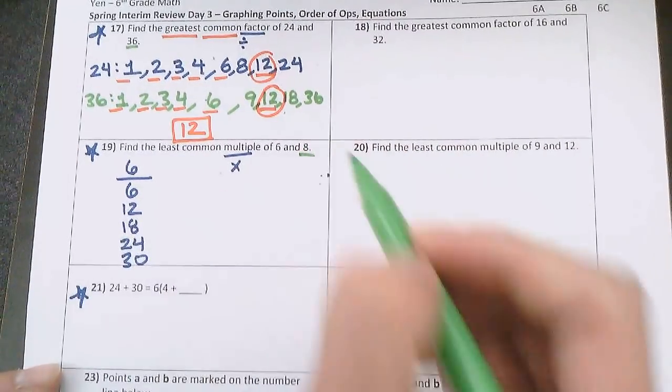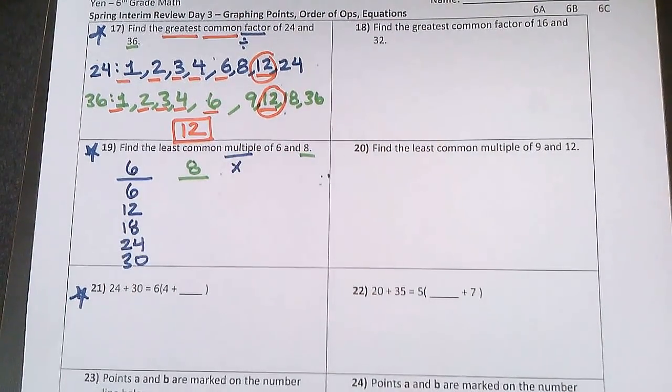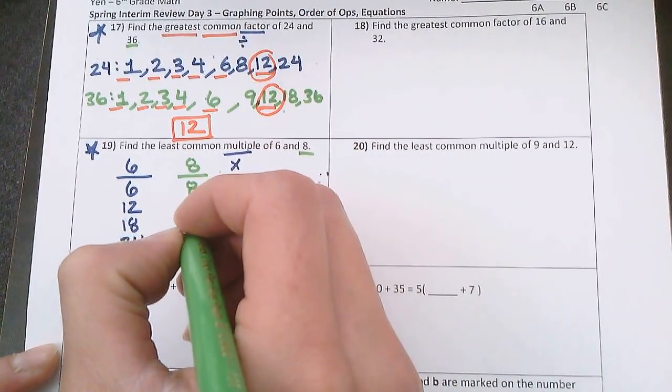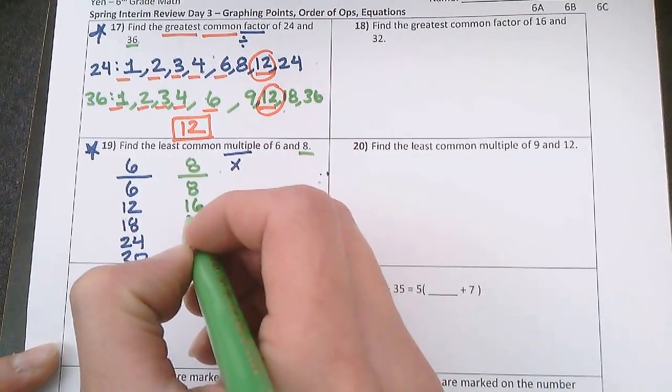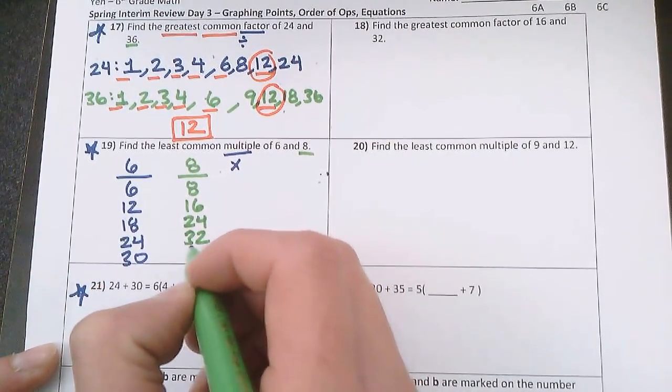I'll do the same thing for 8. What are the multiples of 8? All the numbers that 8 can multiply up to. 8 times 1 is 8. 8 times 2 is 16. 8 times 3 is 24. 8 times 4 is 32. 8 times 5 is 40.